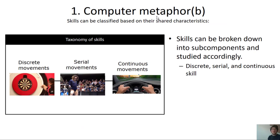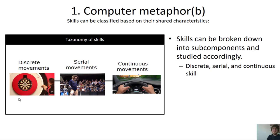One implication of the computer metaphor is that skills can be classified based on their shared characteristics. Skills can be broken down into sub-components and studied accordingly. There are different types: discrete movements have a definitive beginning and end — for example, throwing a dart or kicking a soccer ball. Serial movements involve more than one discrete skill that must happen in the correct sequence — a gymnastics routine or playing the piano are good examples.